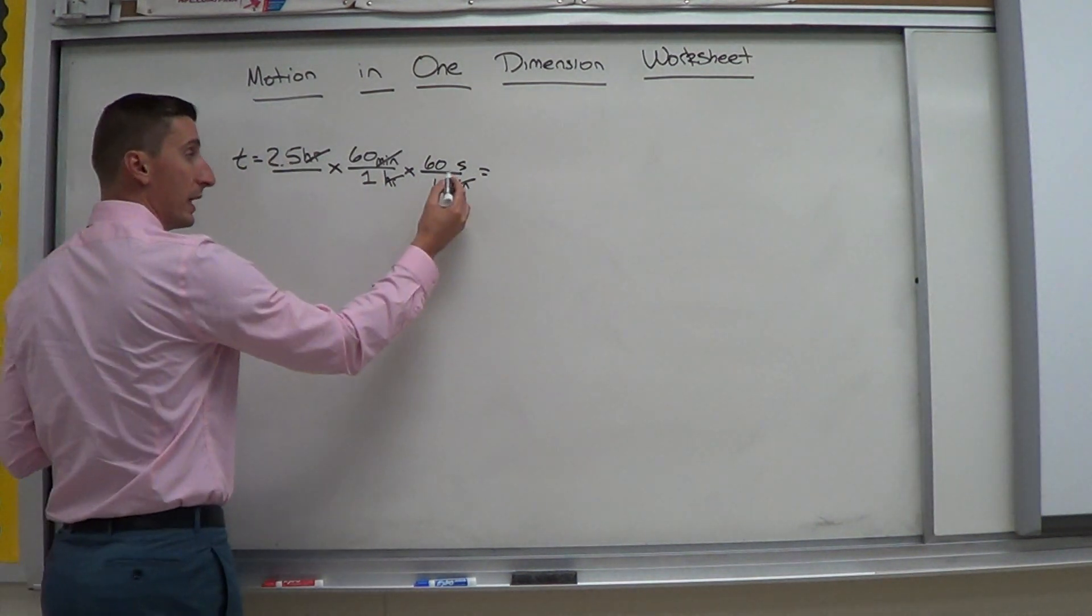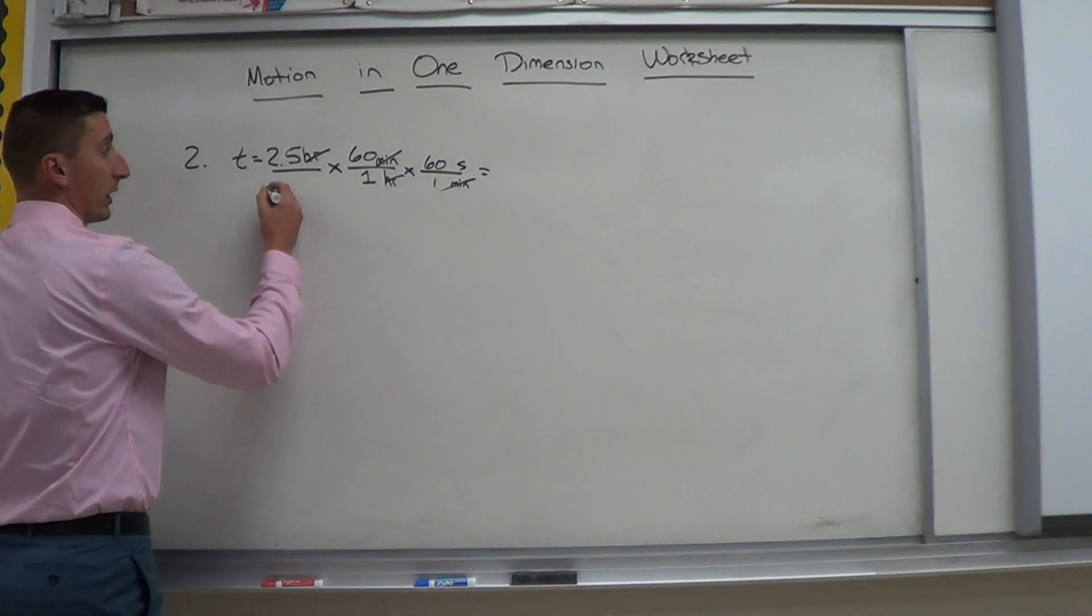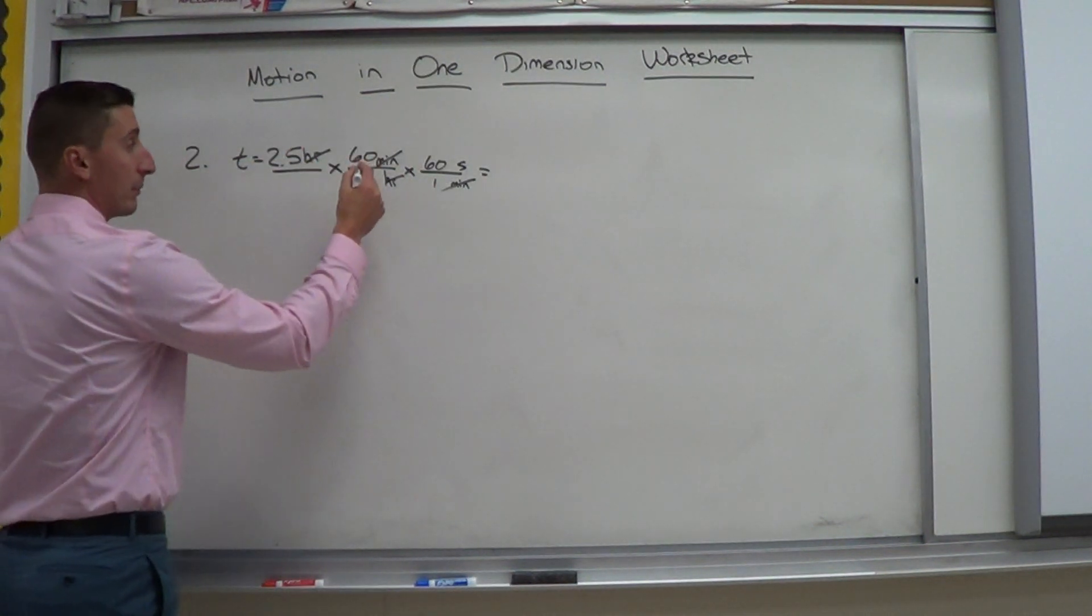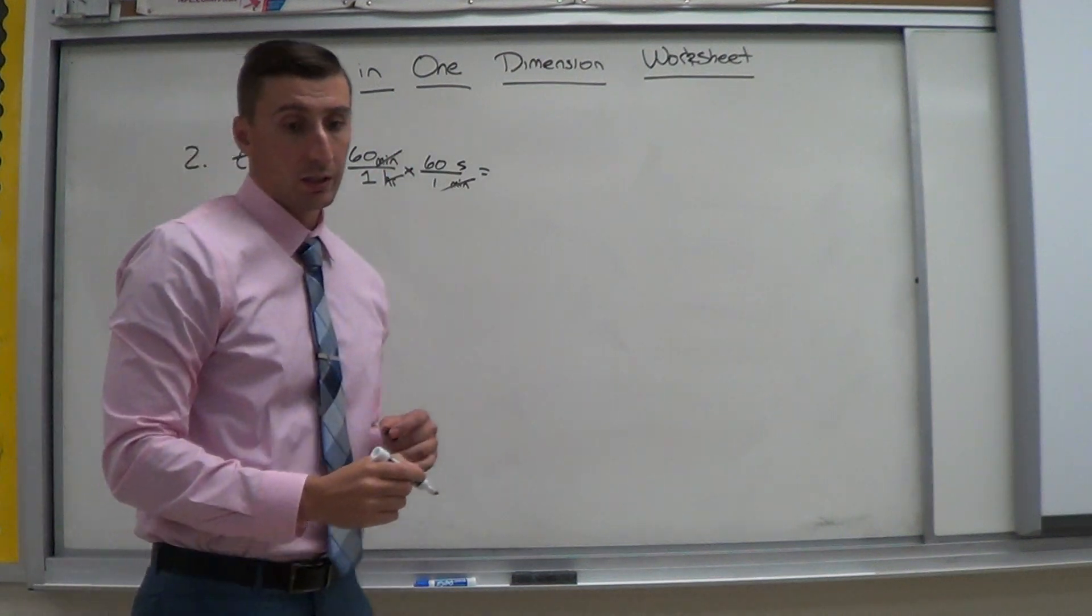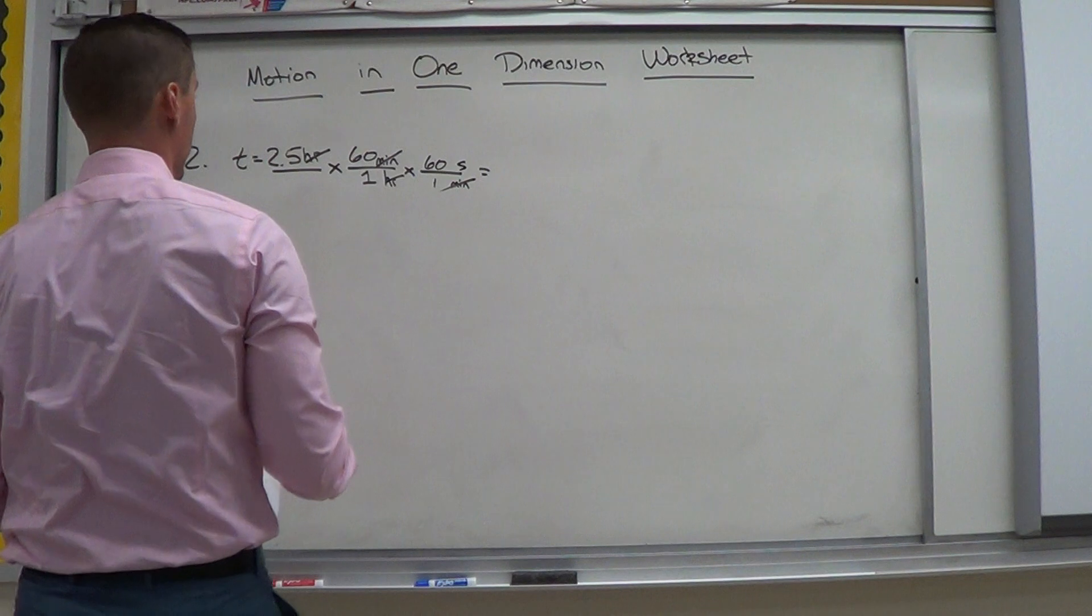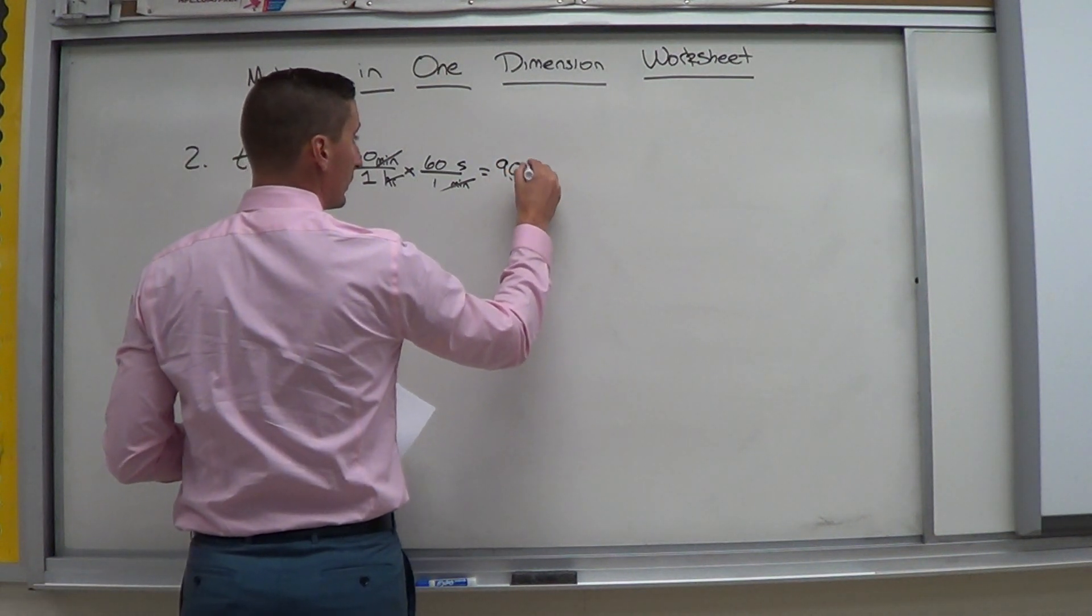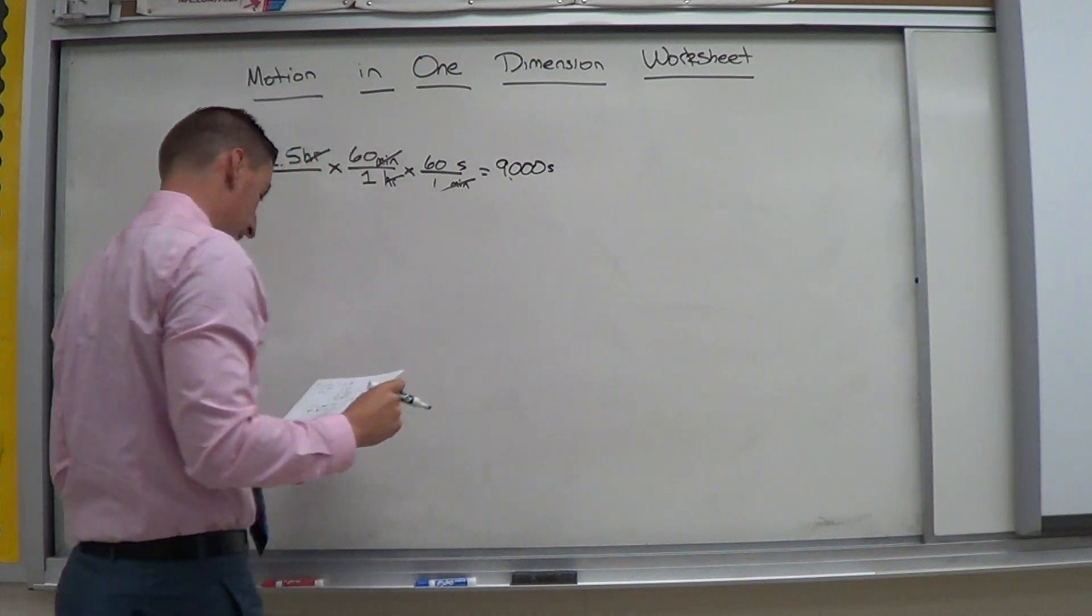So what you do is, anything on top, you multiply. Anything on the bottom, you divide. Well, there's really nothing on the bottom here. So all I'm going to do is multiply across. 2.5 times 60 times 60 gives me 9,000 seconds. Alright. So that's my time.